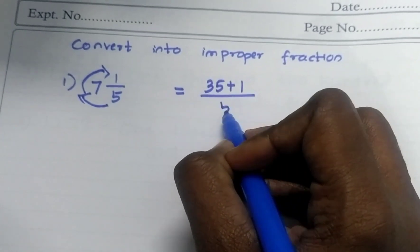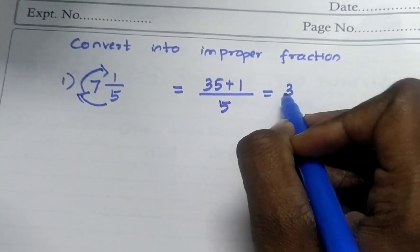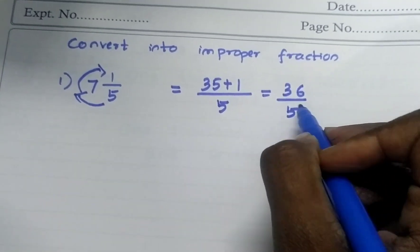By whatever number is the denominator, the same number. So 35 plus 1 is 36. 36 by 5.